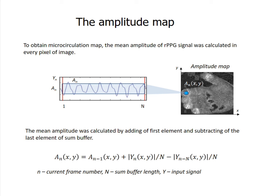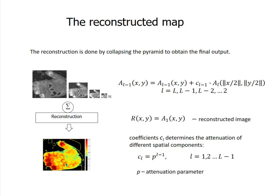To obtain the microcirculation map, the mean amplitude of the rPPG signal was calculated in every pixel of video frames within the frame buffer. To increase computational speed, the mean amplitude of the signal was calculated by adding the current intensity value and subtracting the last value of the frame buffer. The frame buffer was 5 seconds long, corresponding to 150 frames. Reconstruction was done by collapsing the pyramid to obtain the final output. Each pyramid image is multiplied by a coefficient, which leads to amplification of the corresponding spatial component. The final image is found by a recursive formula, where in the last iteration we obtain the reconstructed map.